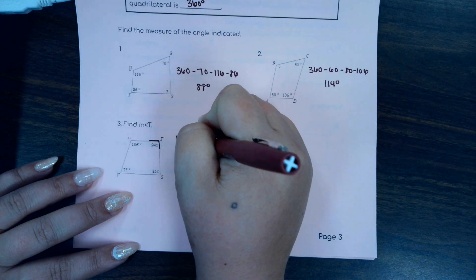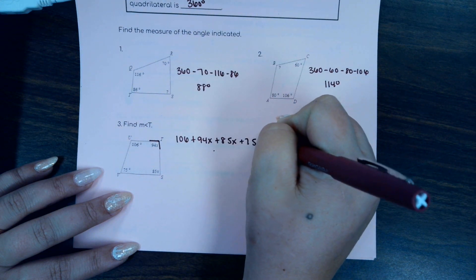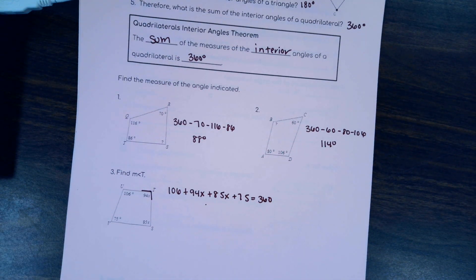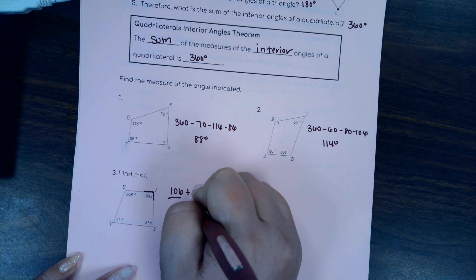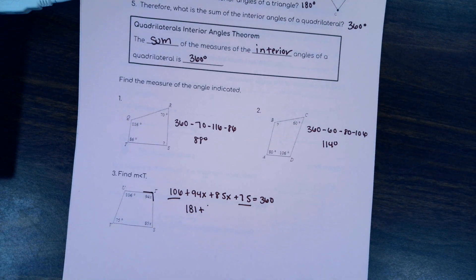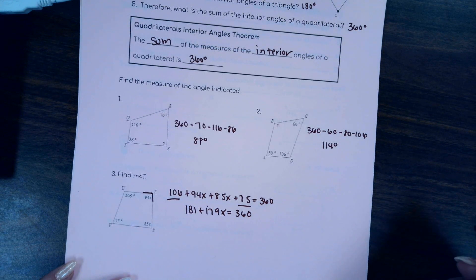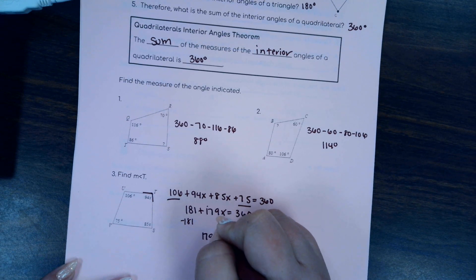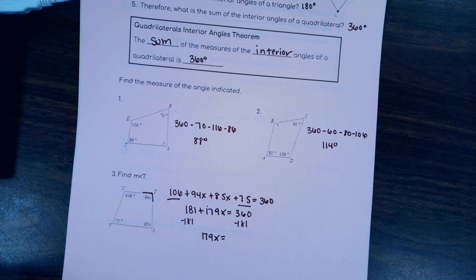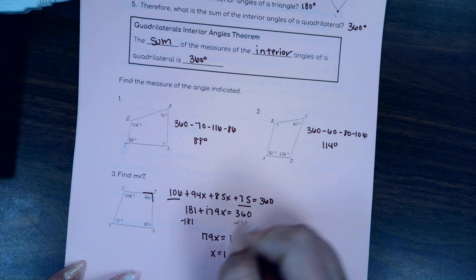106 plus 94X plus 85X plus 75 equals 360. Then we've just got to combine like terms. So 106 plus 75 gives you 181 plus 94 plus 85 will give you 179. Yes, 179X equals 360. Subtract 181 from both sides. 179X equals, look at that, 179. Divide both sides by 179, you will get X equals 1.